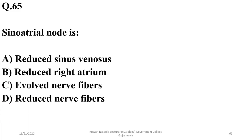The sinoatrial node is a reduced sinus venosus. So the right option in this case is A.